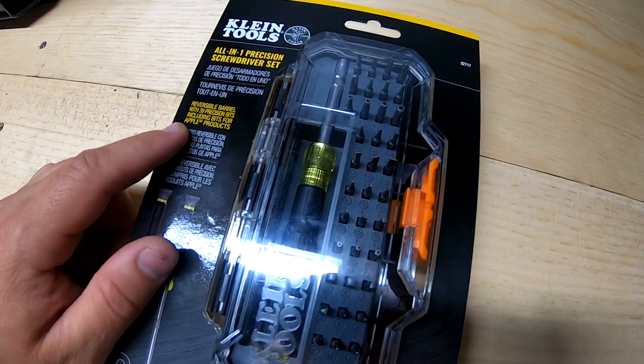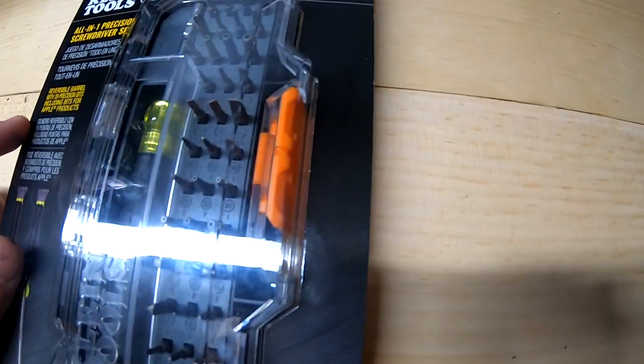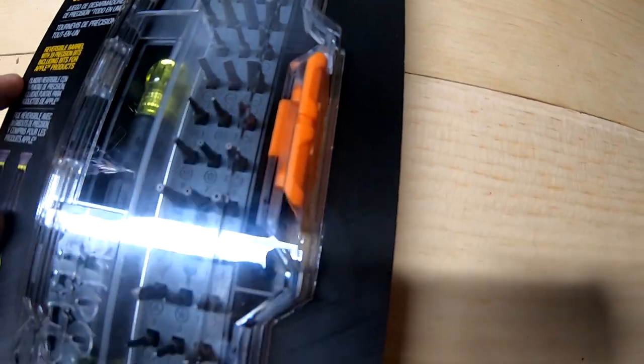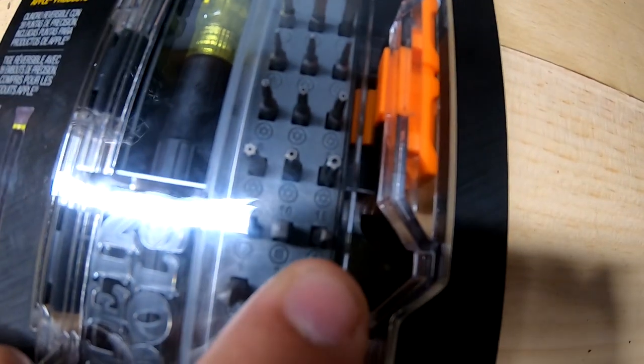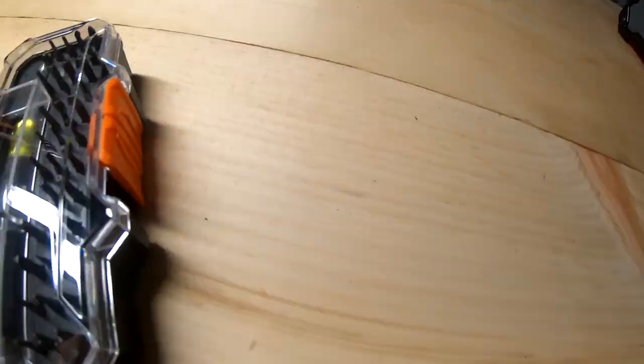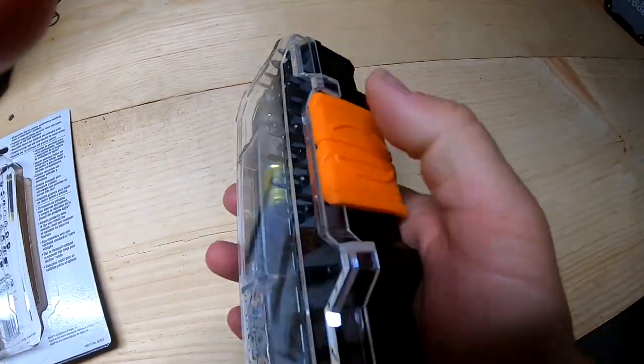So I'm not sure which ones would be the Apple bits, unless it's the triangle. I'm not sure what they use. All right, so here it is. Looks like I scratched it a little bit.